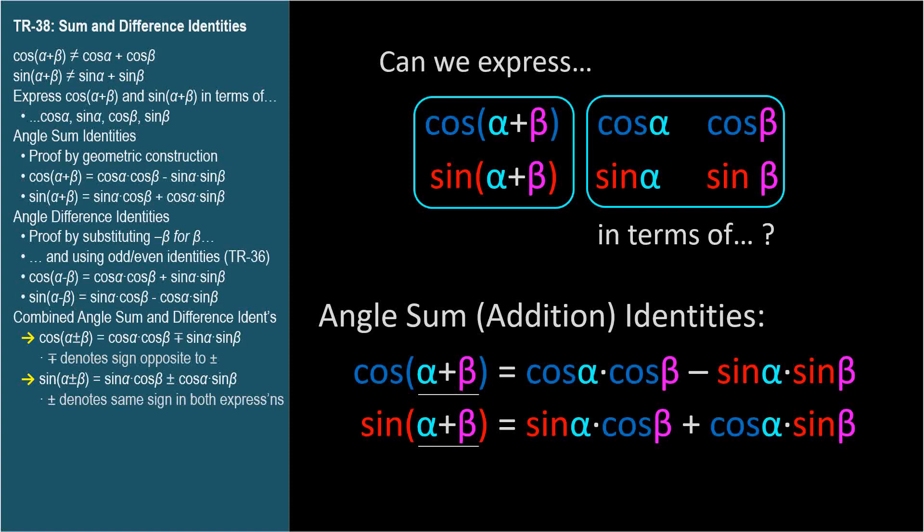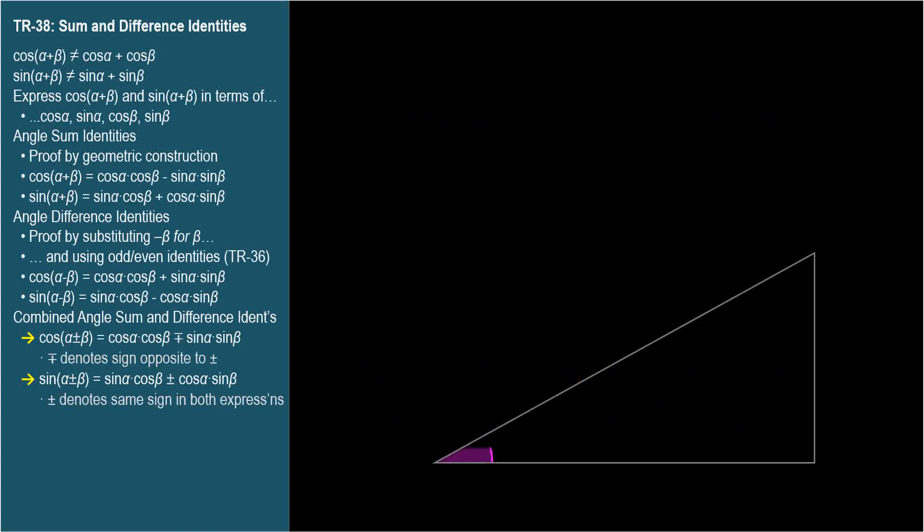We'll prove these identities with an interesting geometric construction, and these identities will be key in proving the next several identities in upcoming videos. We start by constructing a right triangle having the second angle, beta, as one of its acute angles, and put it in standard position. This proof is simplest to explain with acute angles for alpha and beta, but the results will be applicable to any angle.